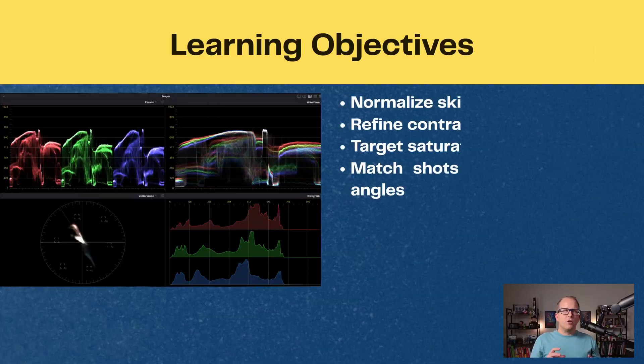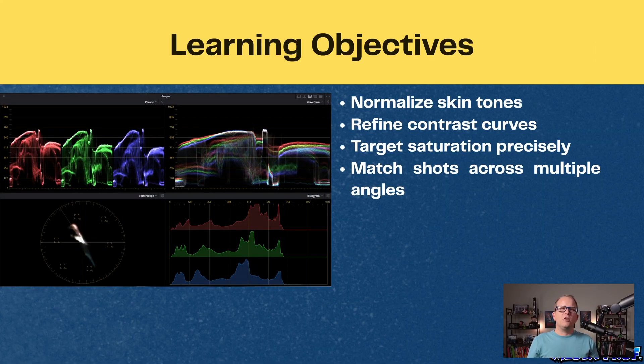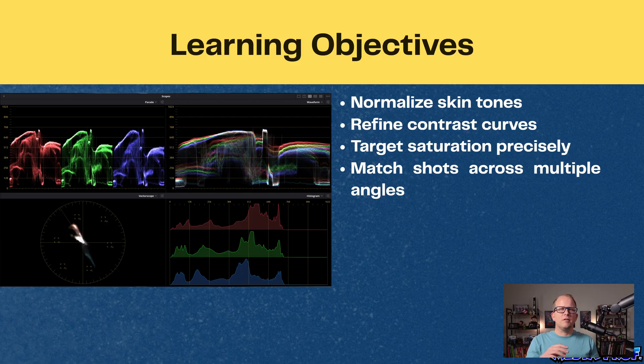You can have perfect exposure, perfect white balance, but if your skin tones look off, your whole image is going to look wrong. By the end of this, you'll be able to normalize your skin tones, refine your contrast with a little bit more precision, manage your saturation selectively, and keep your shots consistent across multiple angles.